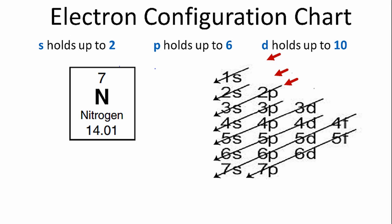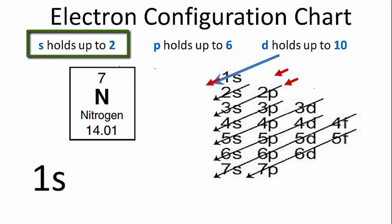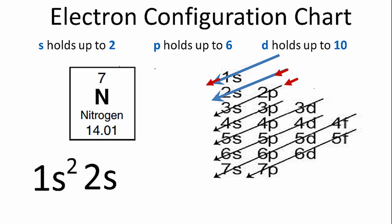We'll start with the 1s, and we'll go down there. That's the first orbital, 1s. S orbitals can hold up to two electrons, so we'll put two for the number of electrons in the 1s orbital. We'll go down the 2s, and that will also hold two.